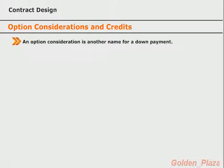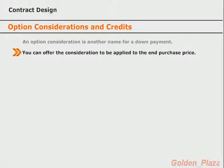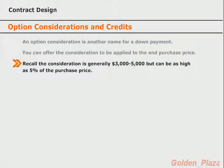An option consideration is just a fancy name for a down payment — you don't want to call it a down payment. The amount you require for the consideration can be applied to the end purchase price of the property, thus helping the tenant buyer reduce that final price. In most cases, the option consideration is only $3,000 to $5,000 or three months of payments, however you can ask as much as 5% of the purchase price. Check with your state to see if they have any restrictions on what can be charged for the consideration, and check general market trends in your area to know what is generally accepted.